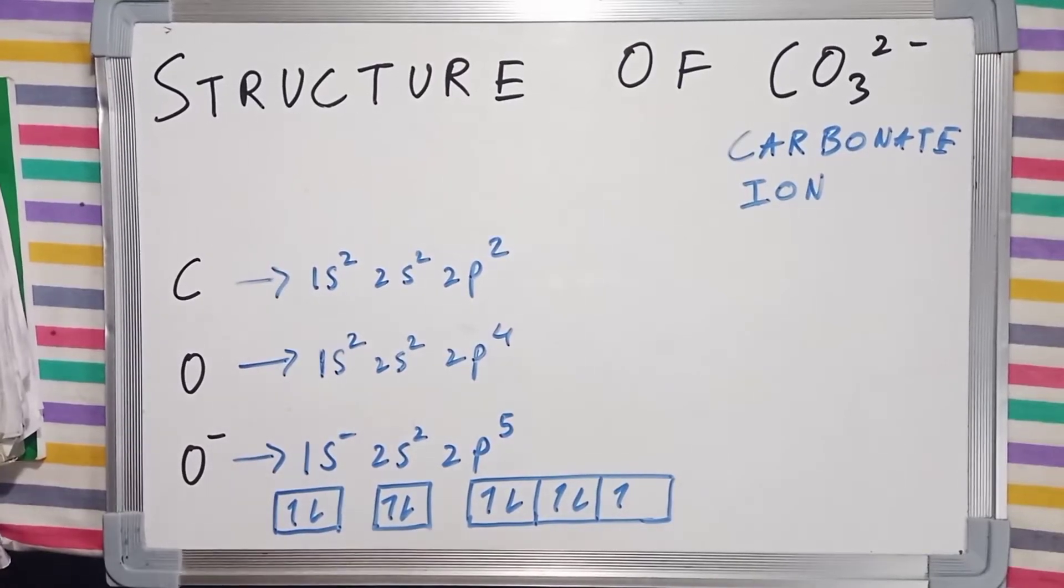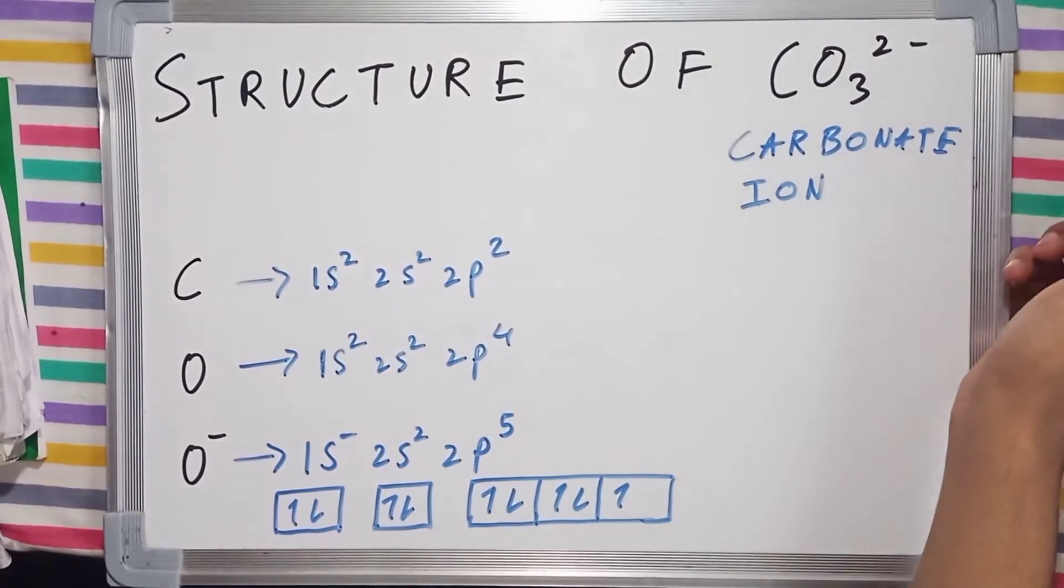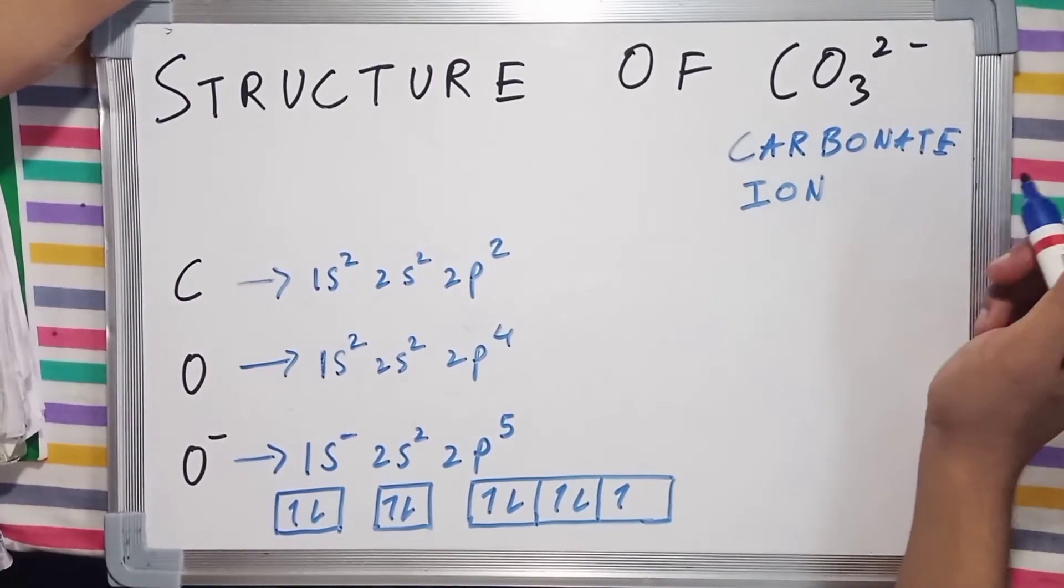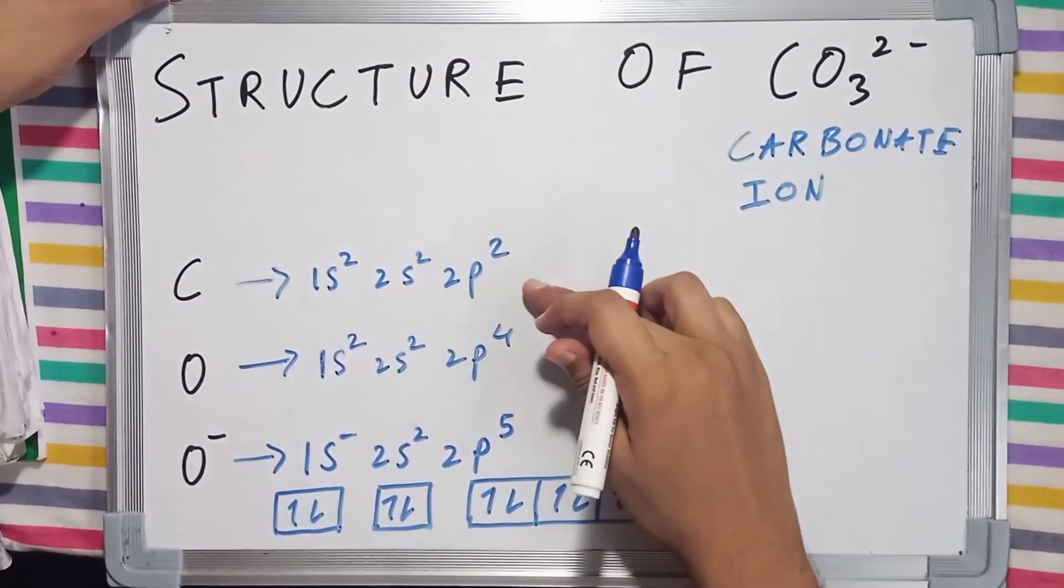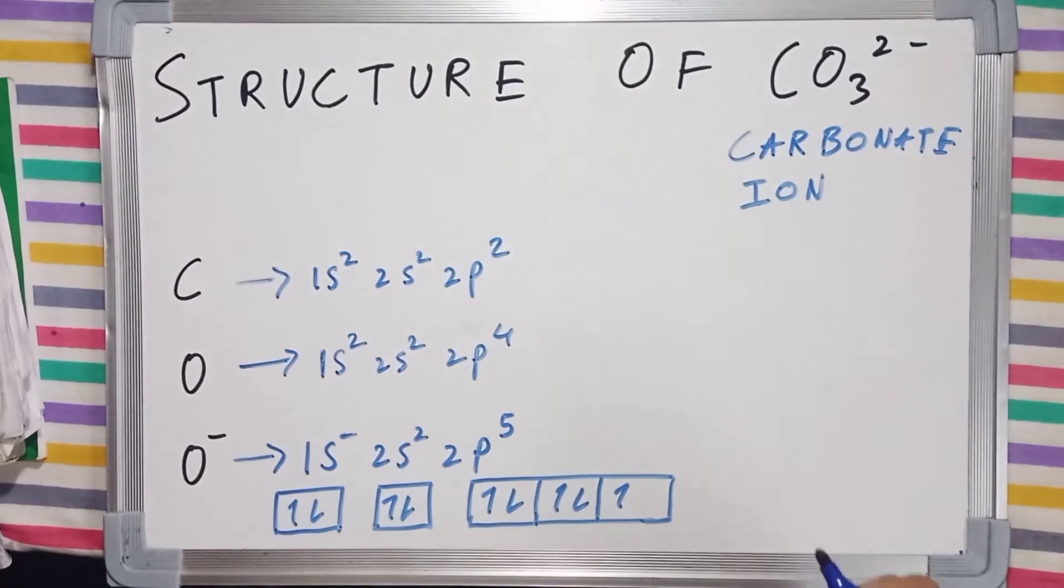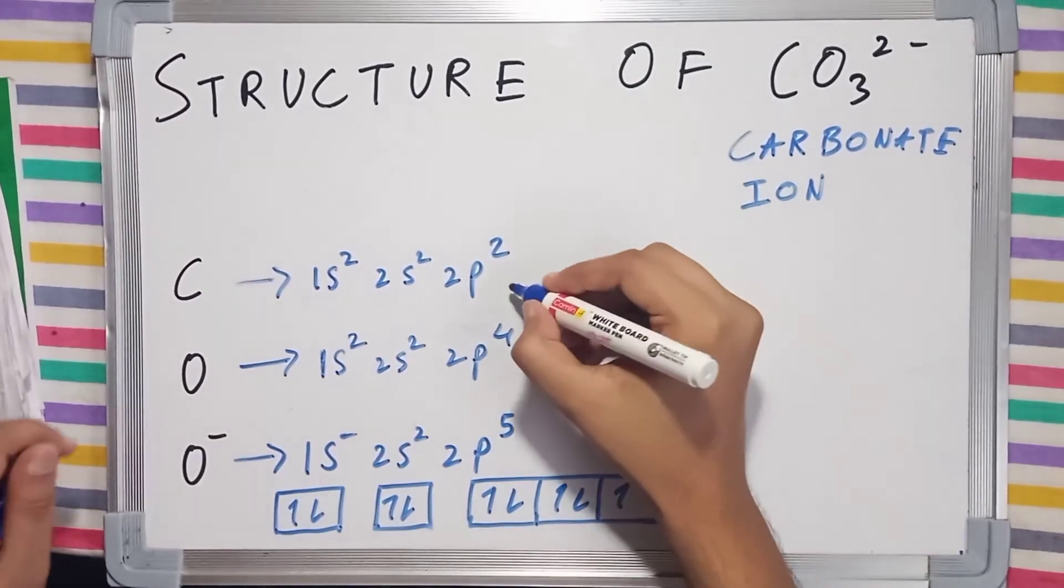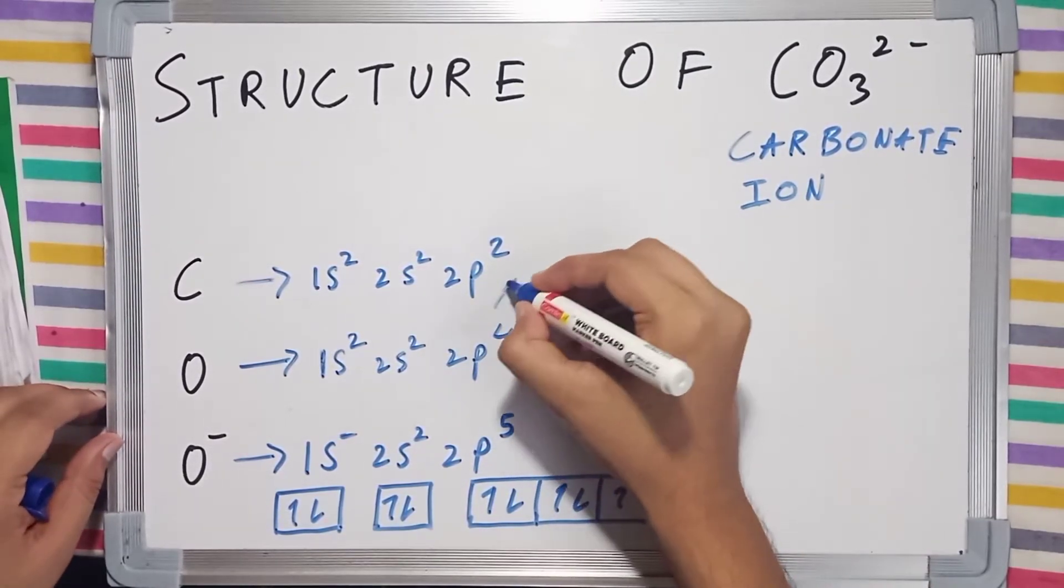We are going to draw the Lewis structure of CO3²⁻, which is also known as carbonate ion. The electronic configuration of carbon is 1s² 2s² 2p² having 4 valence electrons.